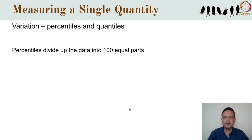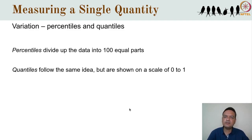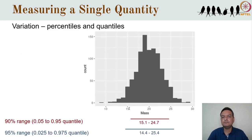You are familiar with this idea from exam scores. If a thousand students write an exam and your rank is 10, then you scored in the 99th percentile — only 1% of students scored higher than you. When these points are represented on a scale of 0 to 1 rather than 0 to 100, they are referred to as quantiles, making the median the 0.5 quantile and the first quartile the 0.25 quantile.